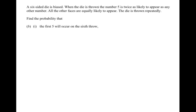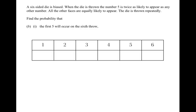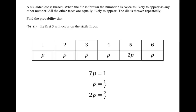The next part tells us that when the die is thrown, the number five is twice as likely to appear as any other number, while the other faces are all equally likely. We let the probability of getting 1, 2, 3, 4, or 6 be p, and the probability of getting a five be 2p. Since all probabilities must sum to one, 7p = 1, so p = 1/7. Therefore the probability of getting a five, 2p, equals 2/7.